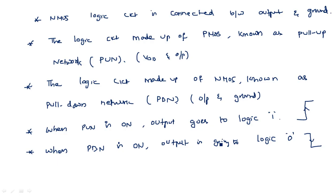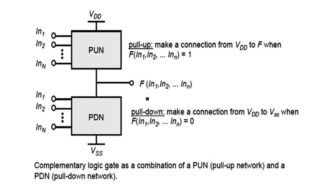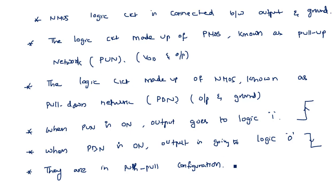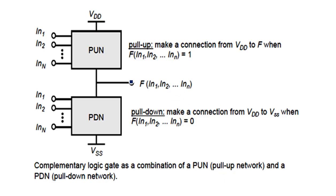The pull-up network and pull-down network are complementary to each other — they are in a push-pull configuration, meaning when one network is in the on state, the other is in the off state. When the pull-up network is on, the pull-down network is off, and vice versa.